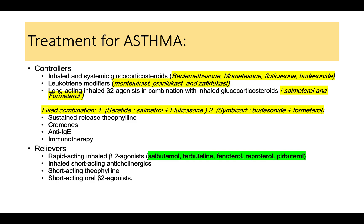Treatments for asthma are split into controllers and relievers. Relievers are prescribed immediately during an attack to dilate the bronchi and increase airflow. These include rapid-acting beta-2 agonists like salbutamol, as well as short-acting theophylline and short-acting oral beta-2 agonists. Short-acting beta-2 agonists should always be co-administered with a corticosteroid due to their adverse reactions.